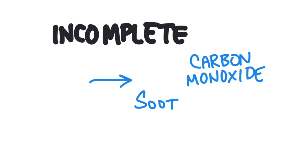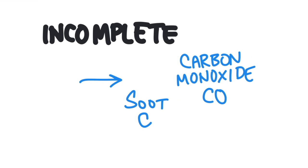So what about incomplete combustion? Incomplete means that the reaction wasn't completely efficient, so we've made some impurities along with the carbon dioxide and water. Generally those impurities are going to be soot — which is made up of carbon atoms — and carbon monoxide, CO. Some people include both carbon monoxide and carbon along with the CO2 and H2O, but some people just add carbon monoxide to the product side.